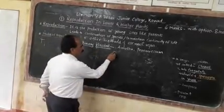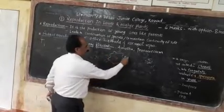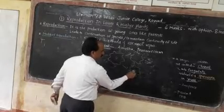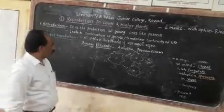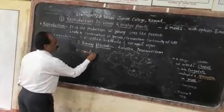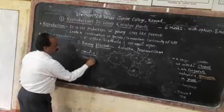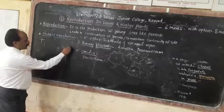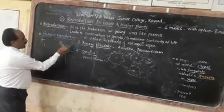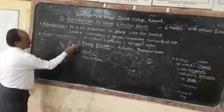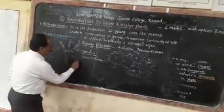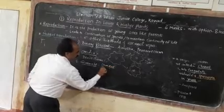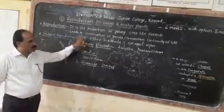Amoeba is an irregularly shaped cell; it splits into two daughter cells — this is binary fission. The second additional method is conidia formation, which occurs in Penicillium. In this case, Penicillium produces new organisms via conidia. The third is gemmule formation, which occurs in sponges. So these are some other methods of asexual reproduction.